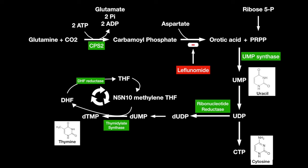Leflunomide interferes with dihydroorotate dehydrogenase, inhibiting the reaction from carbamoyl phosphate to orotic acid. Since this is early on in the pathway, this drug will prevent all three pyrimidines from being synthesized.